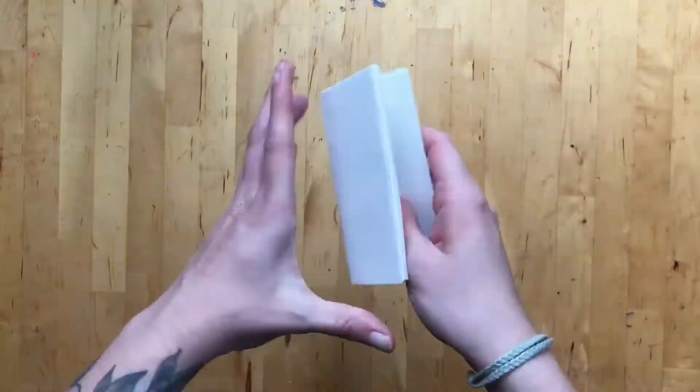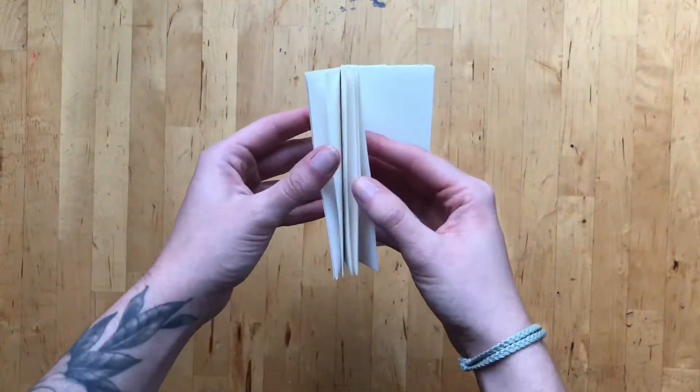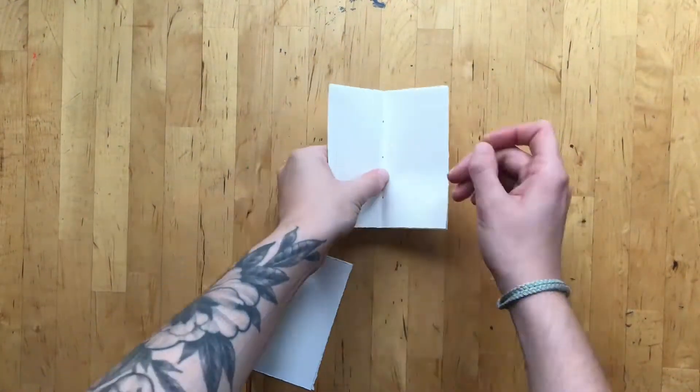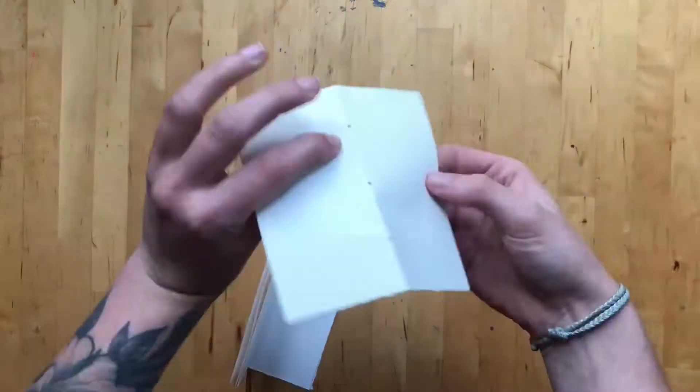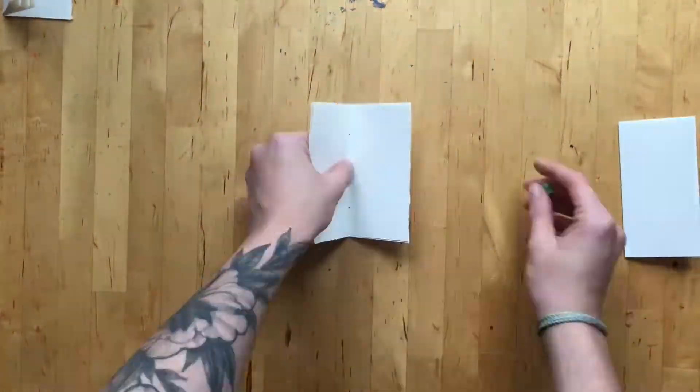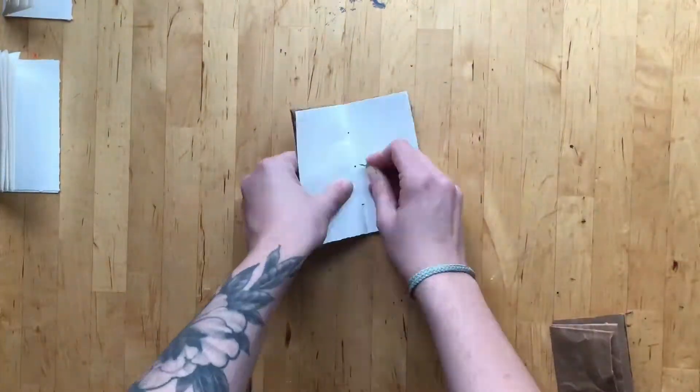After the holes are measured, place the page in the middle of the signature and use a needle or push pin to carefully poke holes through the pages. Repeat this process on the rest of your signatures using the original page as a template.